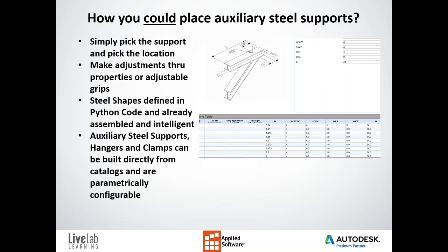We take that code and port it into the catalog — there's a process for that and it's something we're very familiar with. We port it in so you can have a custom supports catalog that's yours alone. Those catalog items can be manipulated: we can add values, add pipe sizes it can fit on. Certain support types can only work with certain pipe sizes, and we can define that within the catalog along with various dimensional values — all very parametric and easy to use.